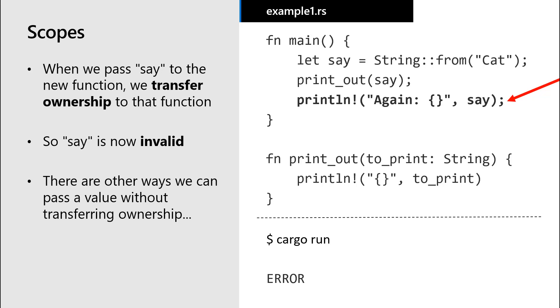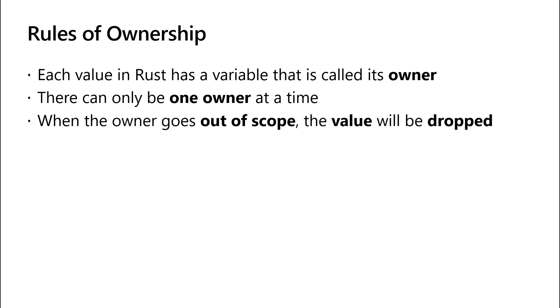Before that, let's review these rules of ownership one more time. Each value in Rust has a variable that is called its owner. There can only be one owner at a time. When the owner goes out of scope, the value will be dropped. These rules are how the Rust compiler prevents you from unintentionally creating memory safety bugs in your code.